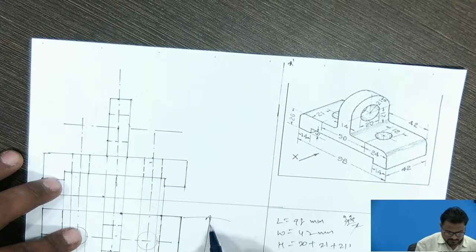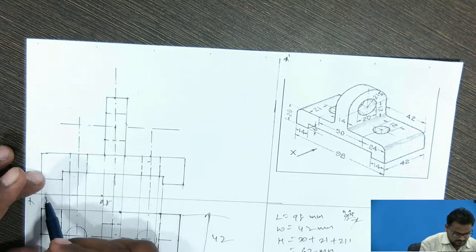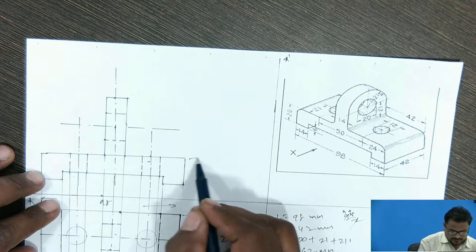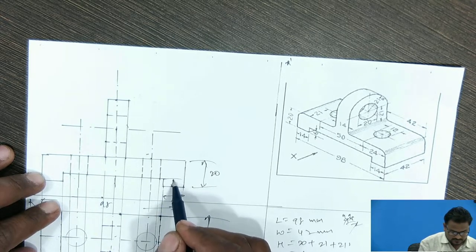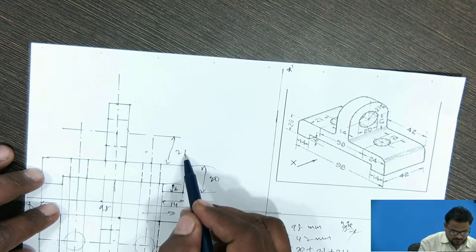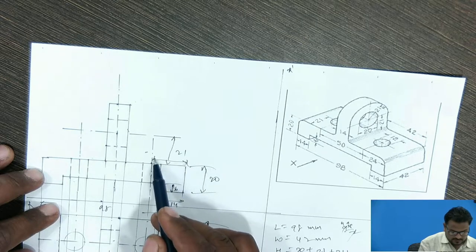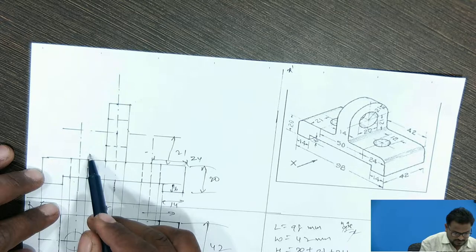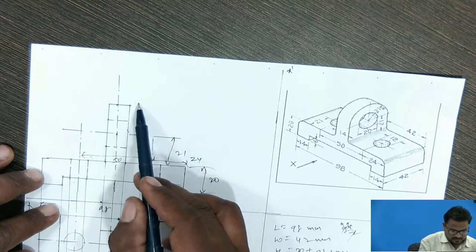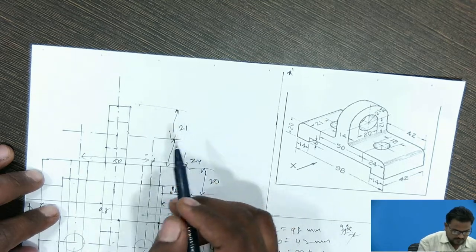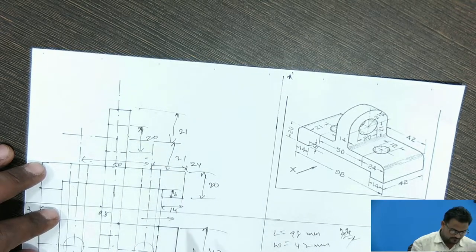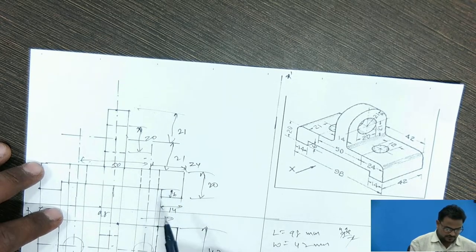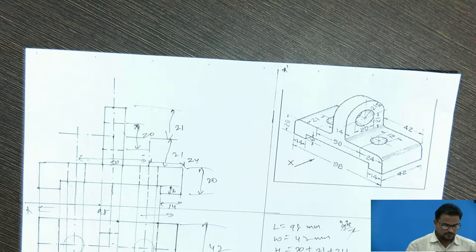This is the 42 and this is the 98 length. This height is 20 mm, this length is 14 mm, and this is also given 6 mm. From this it is 21, and from this end this is 24, and center-to-center distance is given that is 50 mm. Here also, 21 is the radius and this hole dimension is given that is 20 mm. Similarly, this hole is also given 20 mm. This is how we are going to draw the simple object. Thank you.